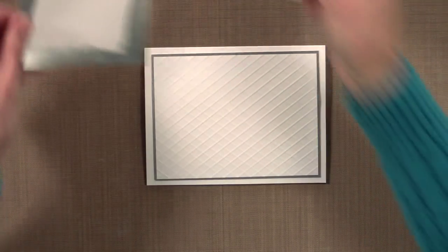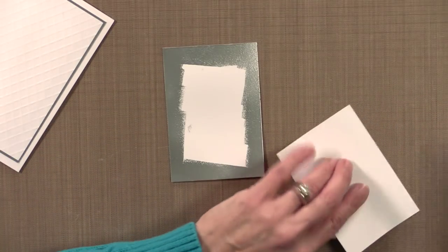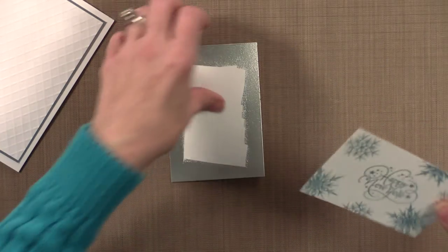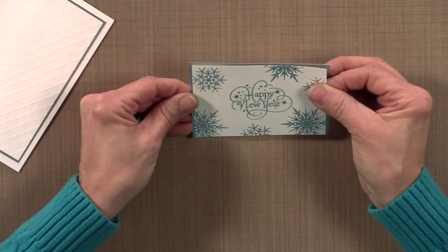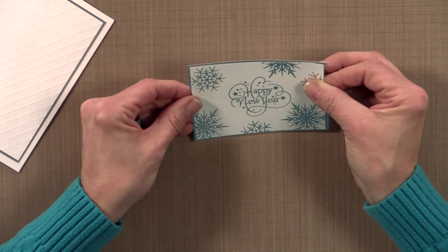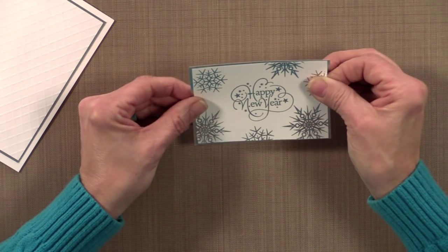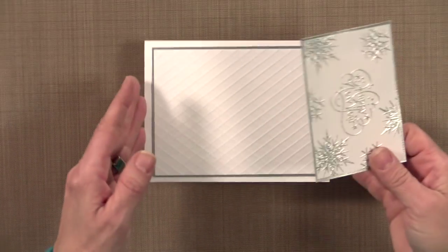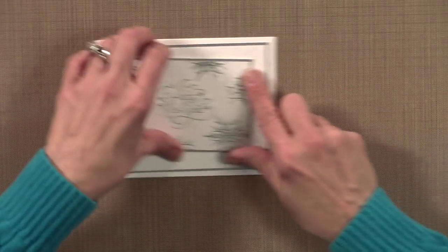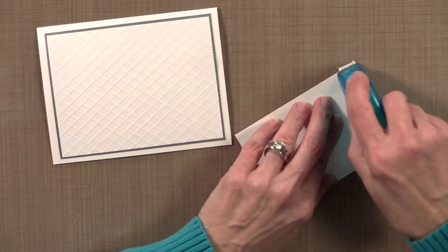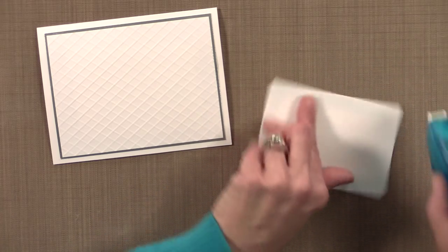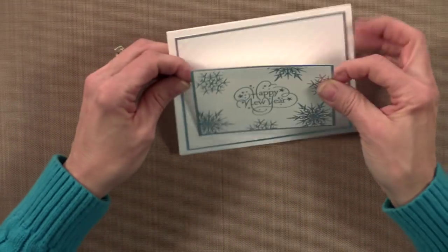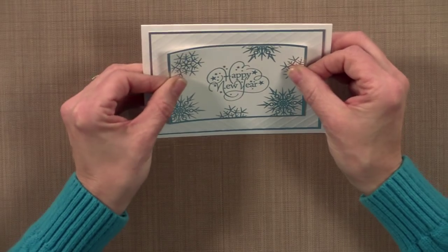And then this whole panel is going to go on top of my card base. And now my focal image and that other piece that I embossed in silver are going to get mounted together. It gives just a nice little edge of sparkle. And then this whole panel is going to go right on top. Now if you want to jazz it up a little bit, you can use foam pop dots, the foam squares, or you can put it right onto the surface of the card. And that makes it very easy to mail with no additional postage required.